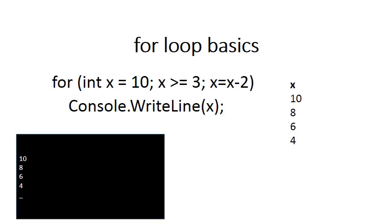Notice what I've done in this for loop — X gets smaller every time. X starts off as 10, and then every time you check whether X is still greater than or equal to 3. After doing the body of the loop, 2 is subtracted from X. So we can see that X goes 10, 8, 6, and 4. It stops at 4 because after that it's not greater than or equal to 3, and it displays 10, 8, 6, and 4 on the screen.